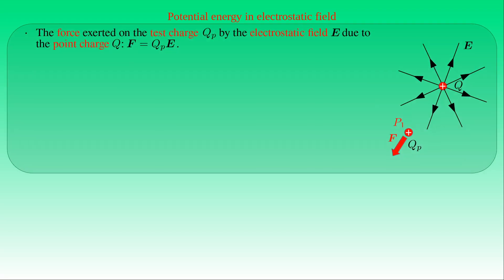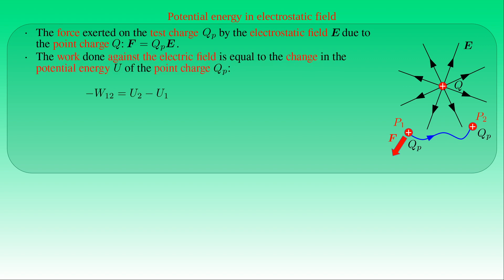By definition, the force F exerted on test charge QP by an electrostatic field due to point charge Q equals the product of QP and the electric field strength E. Suppose QP is brought from point P1 to point P2 without acceleration. Since the electrostatic field is a conservative vector field, the work minus W12 done against the electrostatic force depends only on positions P1 and P2, and equals the change in potential energy U of QP measured at those points. We can write the change in potential energy as 1 over 4πε₀ times the difference between Q·QP/R2 and Q·QP/R1, where R1 and R2 are the distances of P1 and P2 from Q.